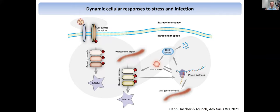Now we come to more context of stress and infection. If you think about the processes that underlie infection that we need to monitor — if you have your viral particle — it needs to enter cells. It can theoretically already interact with cell surface receptors and lead to some form of signaling. And then of course, once the virus is inside the cells, the viral genome copies, or much more often the viral proteins themselves, interact with host factors, can activate signaling cascades, can change protein dynamics such as protein synthesis and protein degradation.